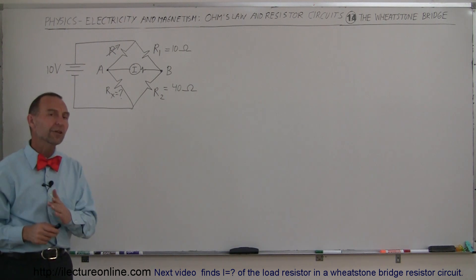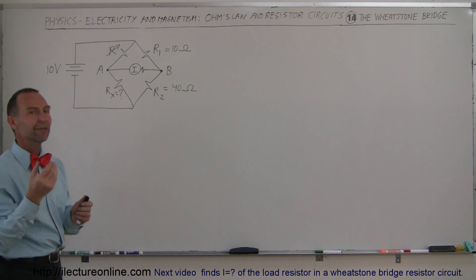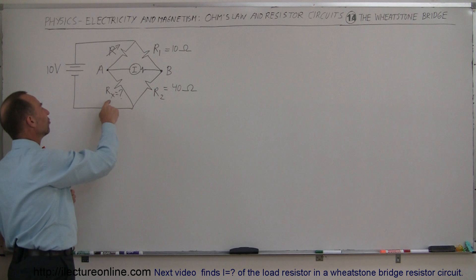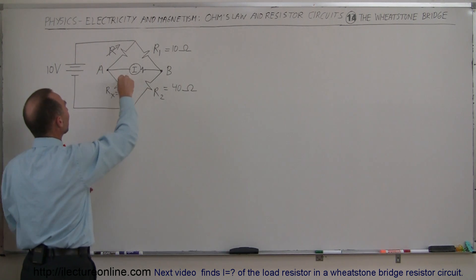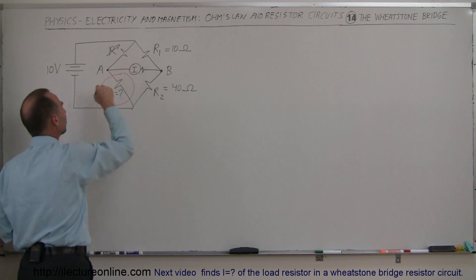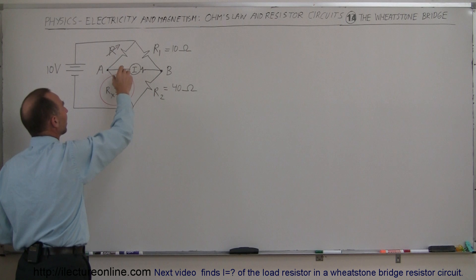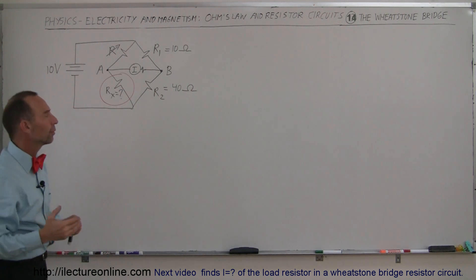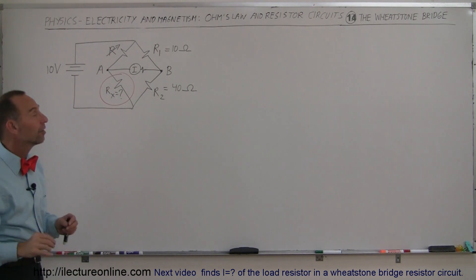What we're going to do in this video is use a Wheatstone Bridge circuit to very accurately find the resistance of an unknown resistor. This is the unknown resistor. We put that into a bridge circuit like this. Here we have what we call a variable resistor or a rheostat — we can actually change its resistance, and I'll show in just a moment why that is necessary.